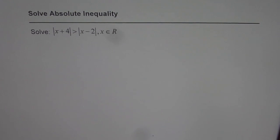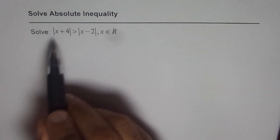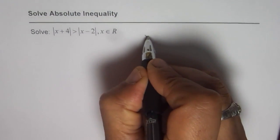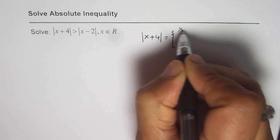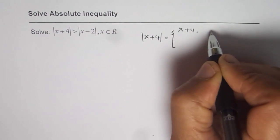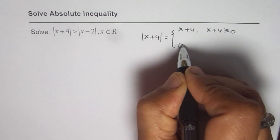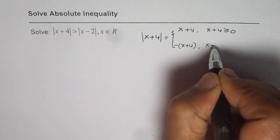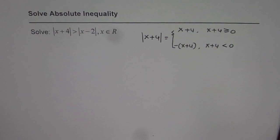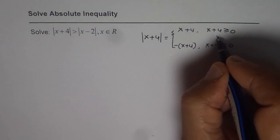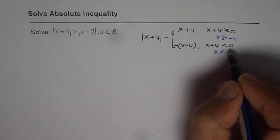The first step is always to write the absolute function as a combination of linear functions. The absolute value of x plus 4 can be written as positive x plus 4 if x plus 4 is greater than or equal to 0, which means x is greater than or equal to minus 4, and negative of x plus 4 if x plus 4 is less than 0, meaning x is less than minus 4.